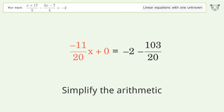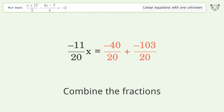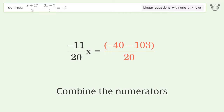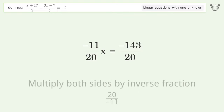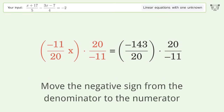Simplify the arithmetic. Convert the integer into a fraction. Combine the fractions. Combine the numerators. Move the negative sign from the denominator to the numerator.